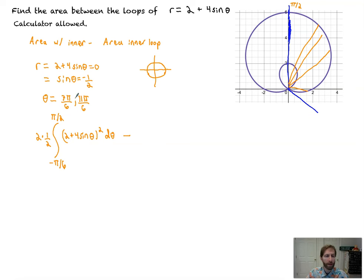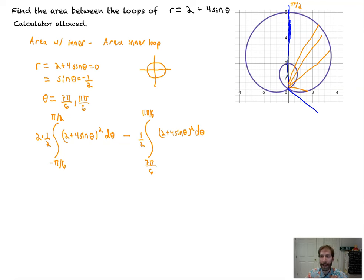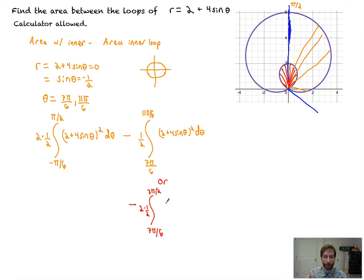Now I subtract out the inner loop. We enter at seven pi over six and exit at eleven pi over six, so that's one-half the integral from seven pi over six to eleven pi over six of (2 plus 4 sine theta) squared d theta. Alternatively, using symmetry, we could do two times one-half from seven pi over six to three pi over two of (2 plus 4 sine theta) squared — finding half the inner loop and doubling it. The overall idea is area of the whole thing minus area of what we don't want.